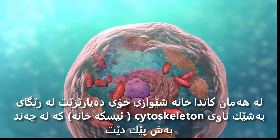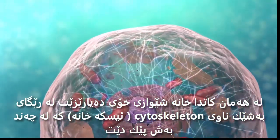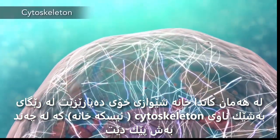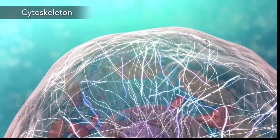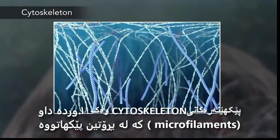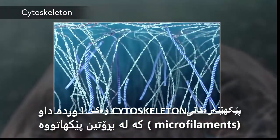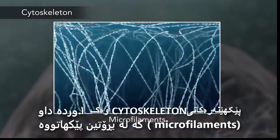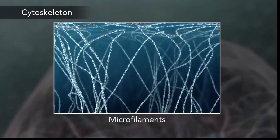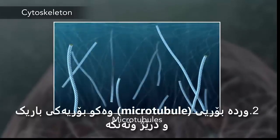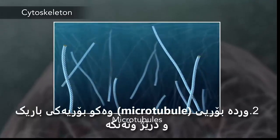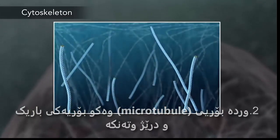The cell maintains its shape through a cytoskeleton. The cytoskeleton includes the thread-like microfilaments, which are made of protein, and microtubules, which are thin, hollow tubes.